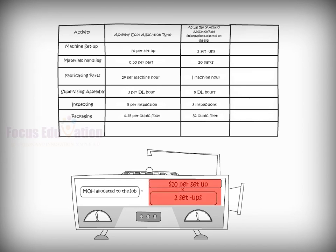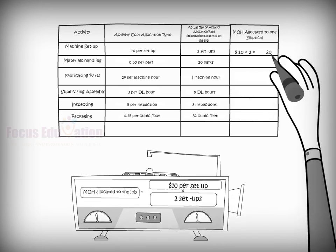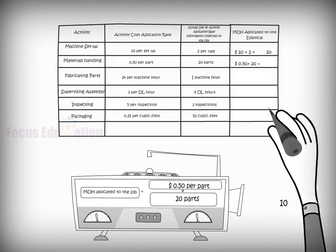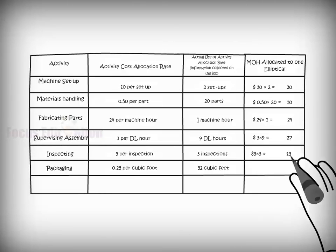This is calculated by multiplying the activity cost allocation rate into the actual amount of activity allocation base by job. For example, the activity cost allocation rates computed helps the managers to allocate manufacturing overhead to a job in which one elliptical was produced.